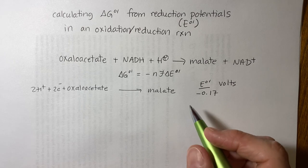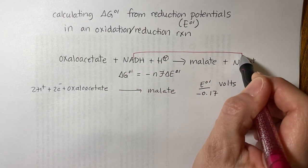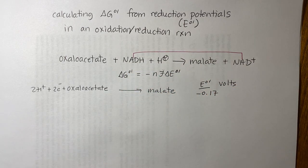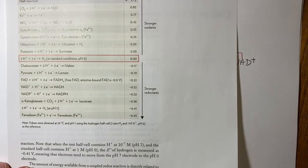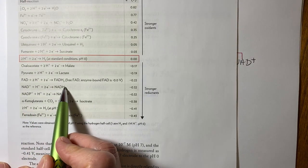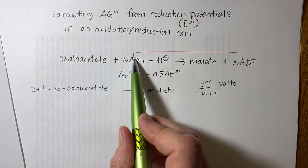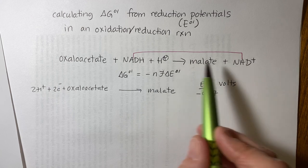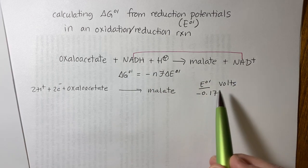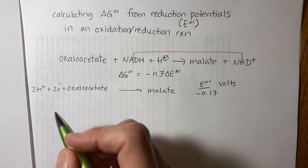Then the second half reaction would be this one. So let's find that in the table, NAD plus to NADH. Notice it's written in reverse in the table, and it shows up in the actual reaction we're looking at. So when that happens, we have to change the sign of the reduction potential. So we will write that reaction out.